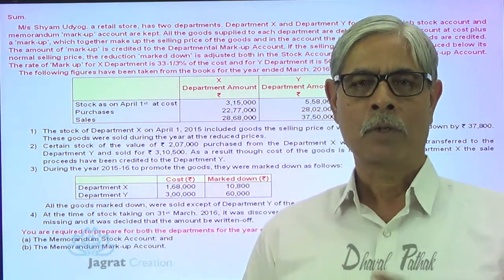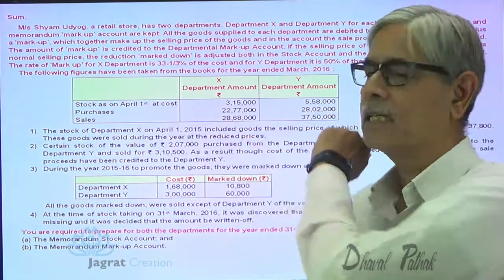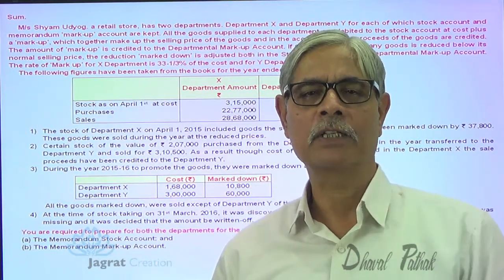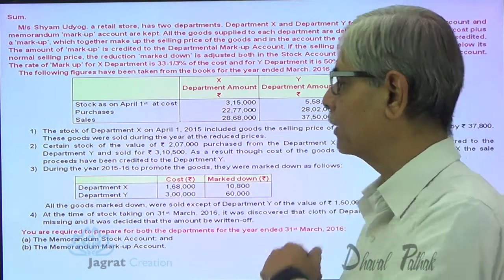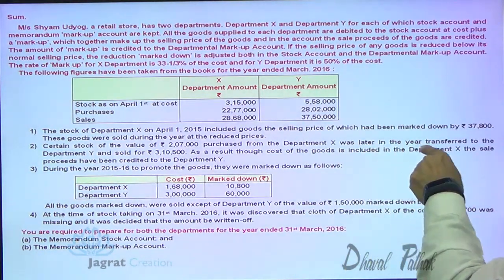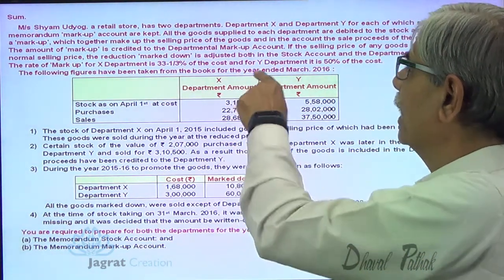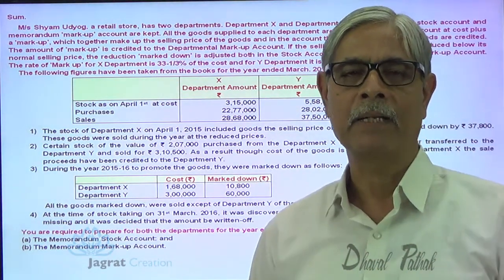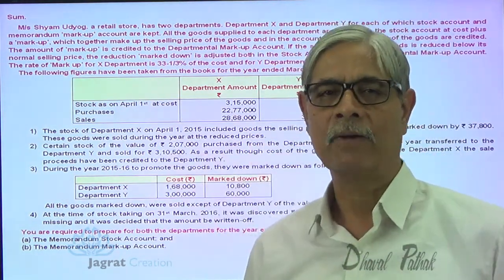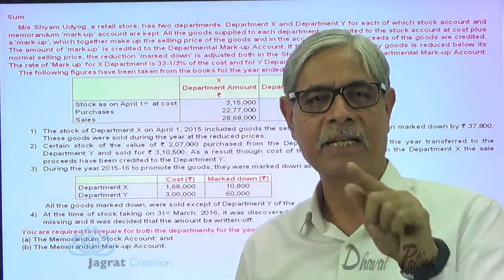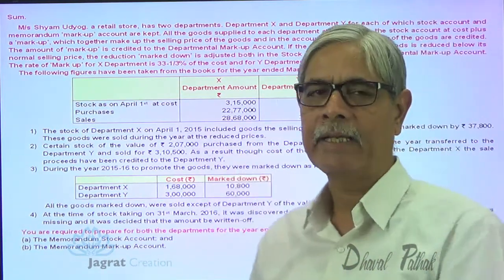Certain stock of 27,000 purchased for Department X was later transferred to Department Y and sold at 3,10,500. This 3,10,500 is 2,70,000 × 150%, because Department Y sells at cost plus 50%. The purchases are recorded in Department X and the sales in Department Y, but the transfer entry needs to be recorded separately while solving the sum.